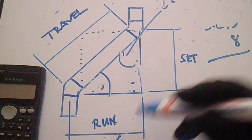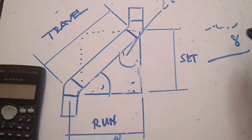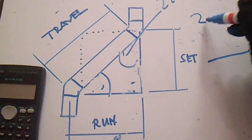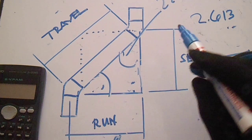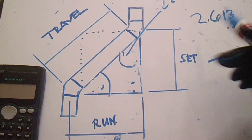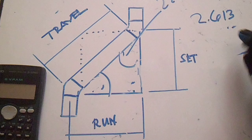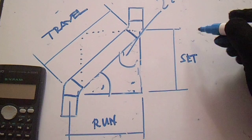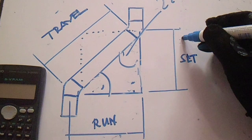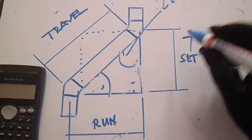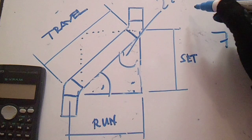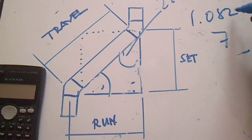This 2.613 is for run — you can multiply run by 2.613 for the 22.5-degree elbow. Now for set: if the given is set, let's say this is 7, you can multiply it by 1.082. So 7 multiplied by 1.082 gives this travel.